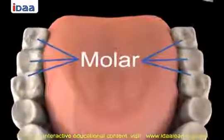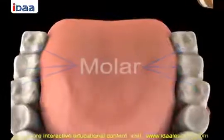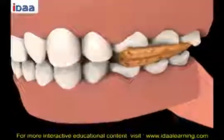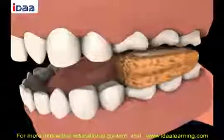Molars — there are six molars. They are used for grinding and chewing the food before swallowing.